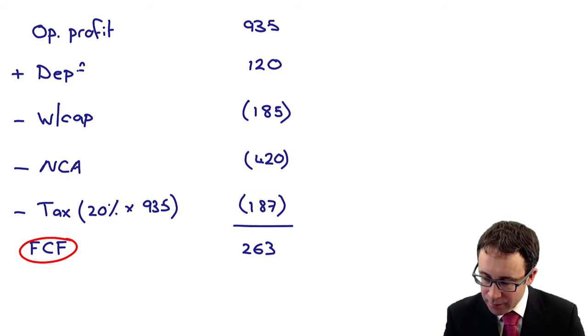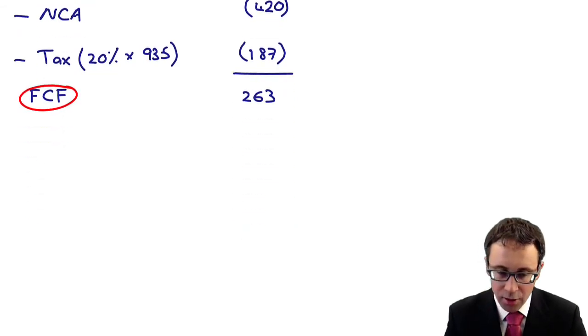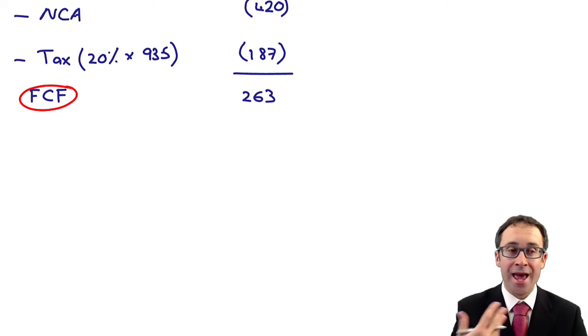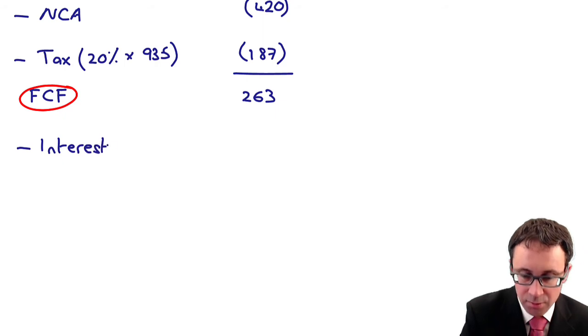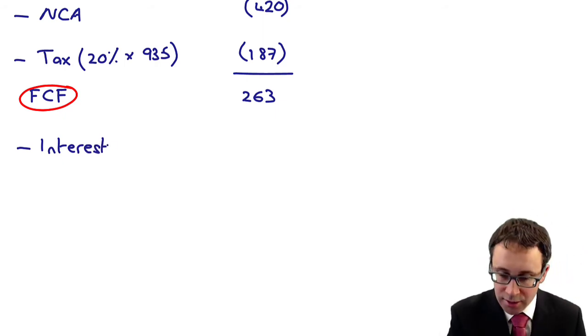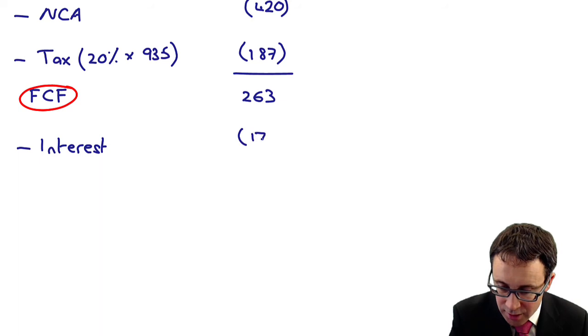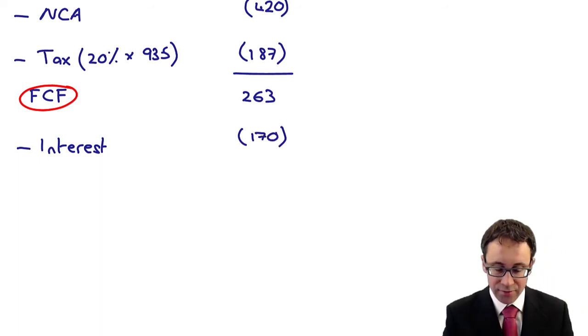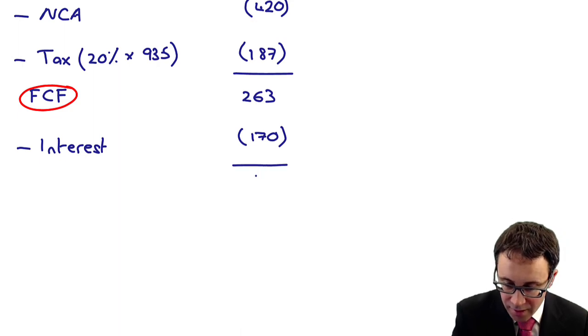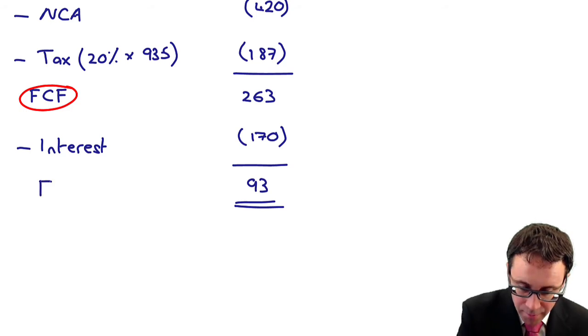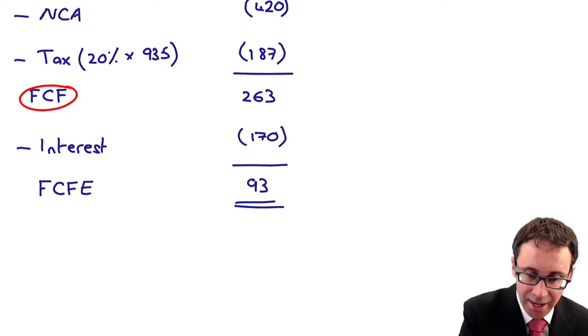Just then be careful, if we then wanted to work out your free cash flow to equity, what we would then need to do is that we would then need to deduct the interest. The interest is there as 170. And as that gave me there, is that 93. And that will then be my free cash flow to equity.